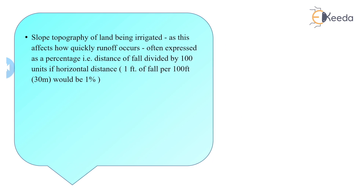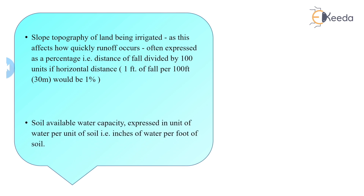Then the slope and topography of the land being irrigated, as this affects how quickly runoff occurs. On a steep slope, runoff is high, while on flat surfaces, runoff is low. So we can control the supply of water properly.